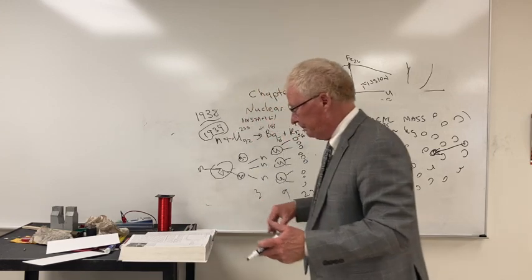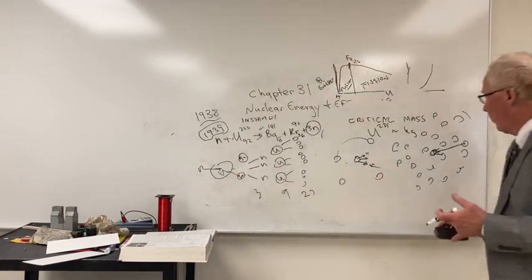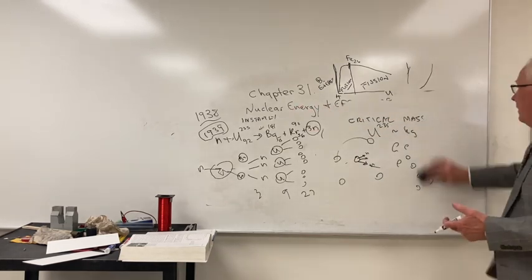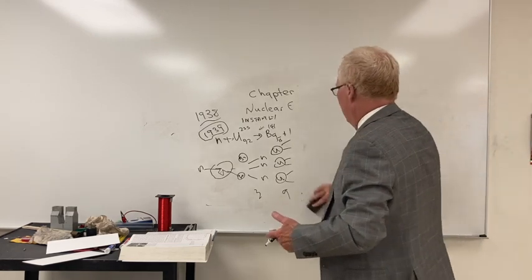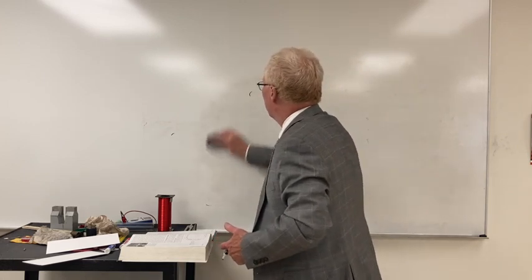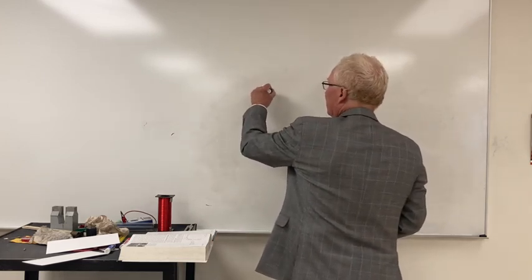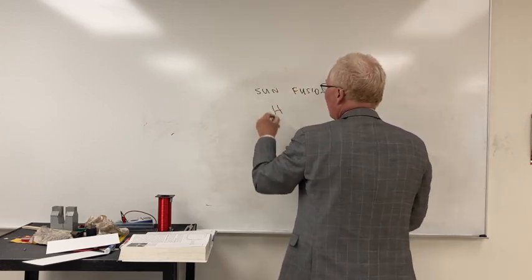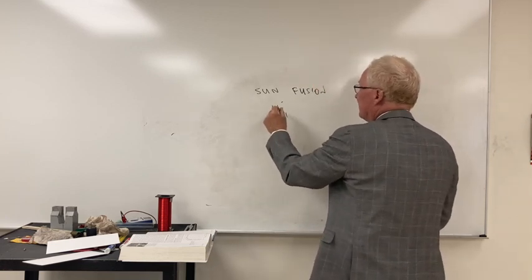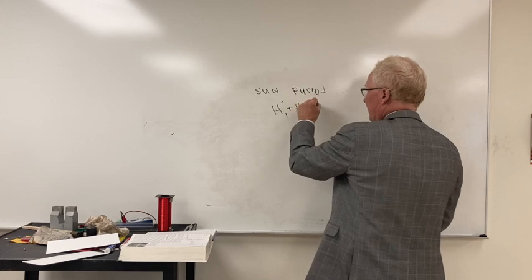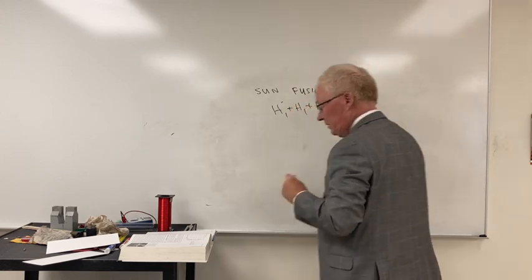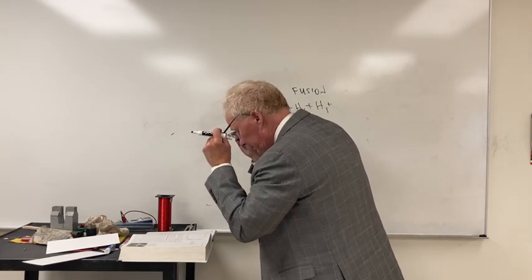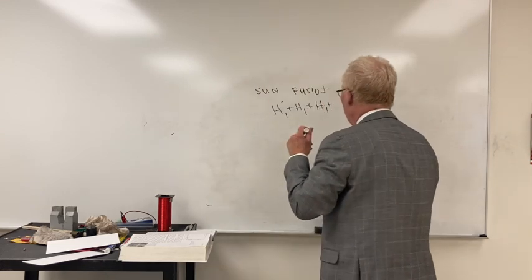On the other hand, on the process of what goes on in the sun, this is fusion. Roughly, what it means is we combine hydrogen plus hydrogen plus hydrogen plus hydrogen, basically combine hydrogen together. Four hydrogens together.